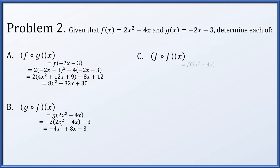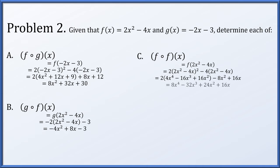For f(f(x)), we take f(x) = 2x² - 4x and plug it into f, which is 2x² - 4x. We need to take that input, square it, multiply by 2, and subtract 4 times it. Expanding the squaring, distributing -4, multiplying by 2, and collecting like terms gives us 8x⁴ - 32x³ + 24x² + 16x.